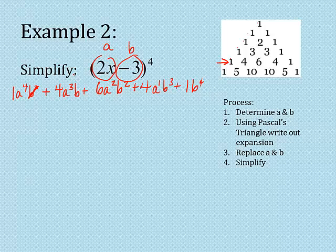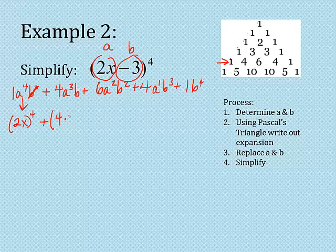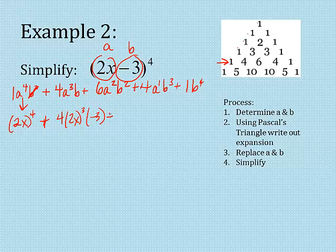Now I'm going to replace A with 2X and B with negative three. So in this first one, anything times one is itself. So it's going to be 2X raised to the fourth, plus four times 2X to the third, all of it get raised to the third power, times negative three, plus six, 2X squared, times negative three squared, plus four times 2X to the first power, times negative three to the third power, plus one times negative three to the fourth power.